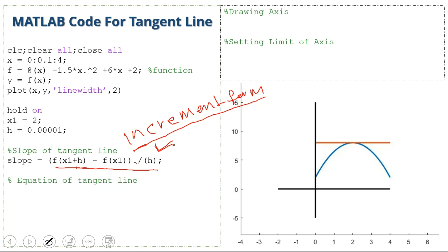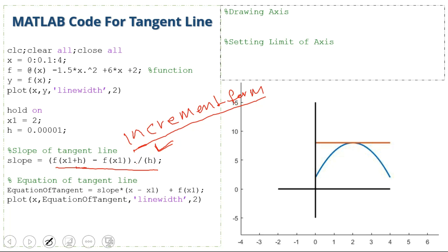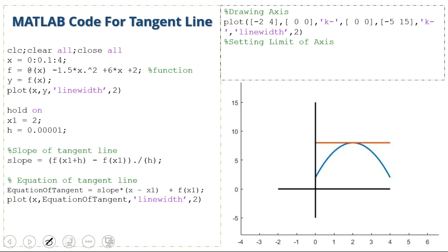The equation of the tangent line is: tangent = slope * (x - x1) + y1, where y1 is the value of the function at x1. Then we plot the tangent line using the plot command, x versus tangent, with line width 2.